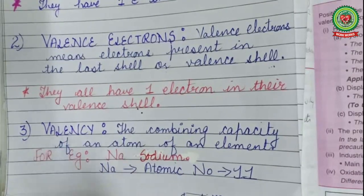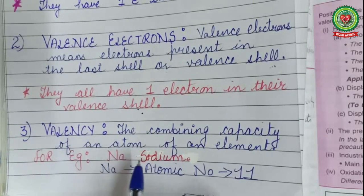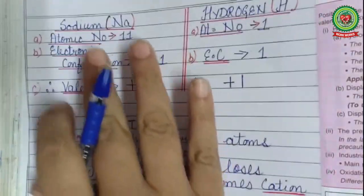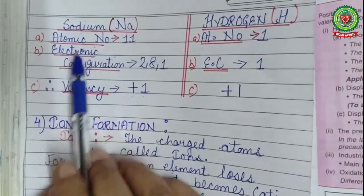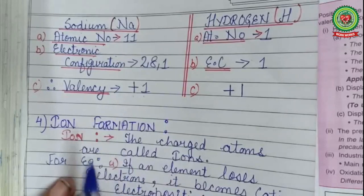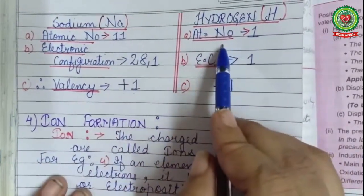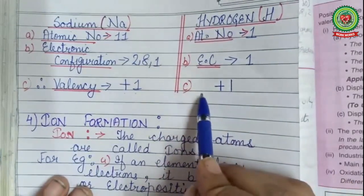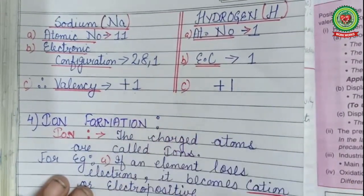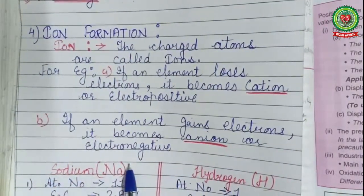The third similarity is valency — the combining capacity of an atom. Sodium has atomic number 11 and electronic configuration 2,8,1; it can lose one electron and acquire valency +1. Hydrogen has atomic number 1 and electronic configuration 1; it can also lose one electron and acquire valency +1.